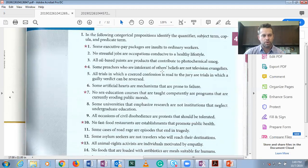All right we'll do one more. Number six. You should be able to get these now. This is the baby steps. Some artificial hearts are mechanisms that are prone to failure. Some is the quantifier. It's a particular quantifier. Artificial hearts is the subject term. Are copula and mechanisms that are prone to failure is our predicate term.